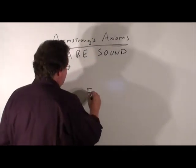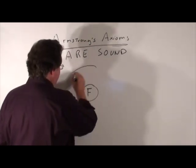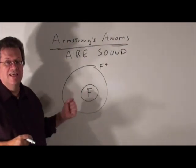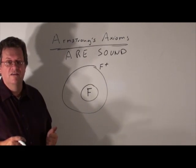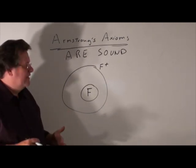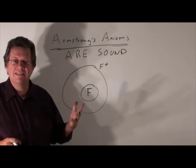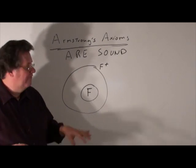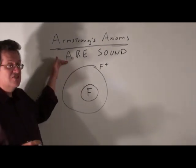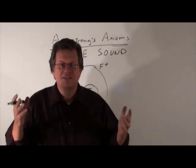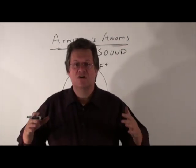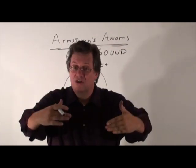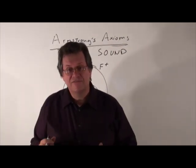Think of it this way. If we have a set of functional dependencies F and we have F-closure, which is a set of all the functional dependencies we can logically imply from F, then if we apply Armstrong's Axioms to F, we will not come up with any functional dependencies that go outside of F-closure. To say Armstrong's Axioms are sound means we're going to find things, but we're only going to find things inside of F-closure.